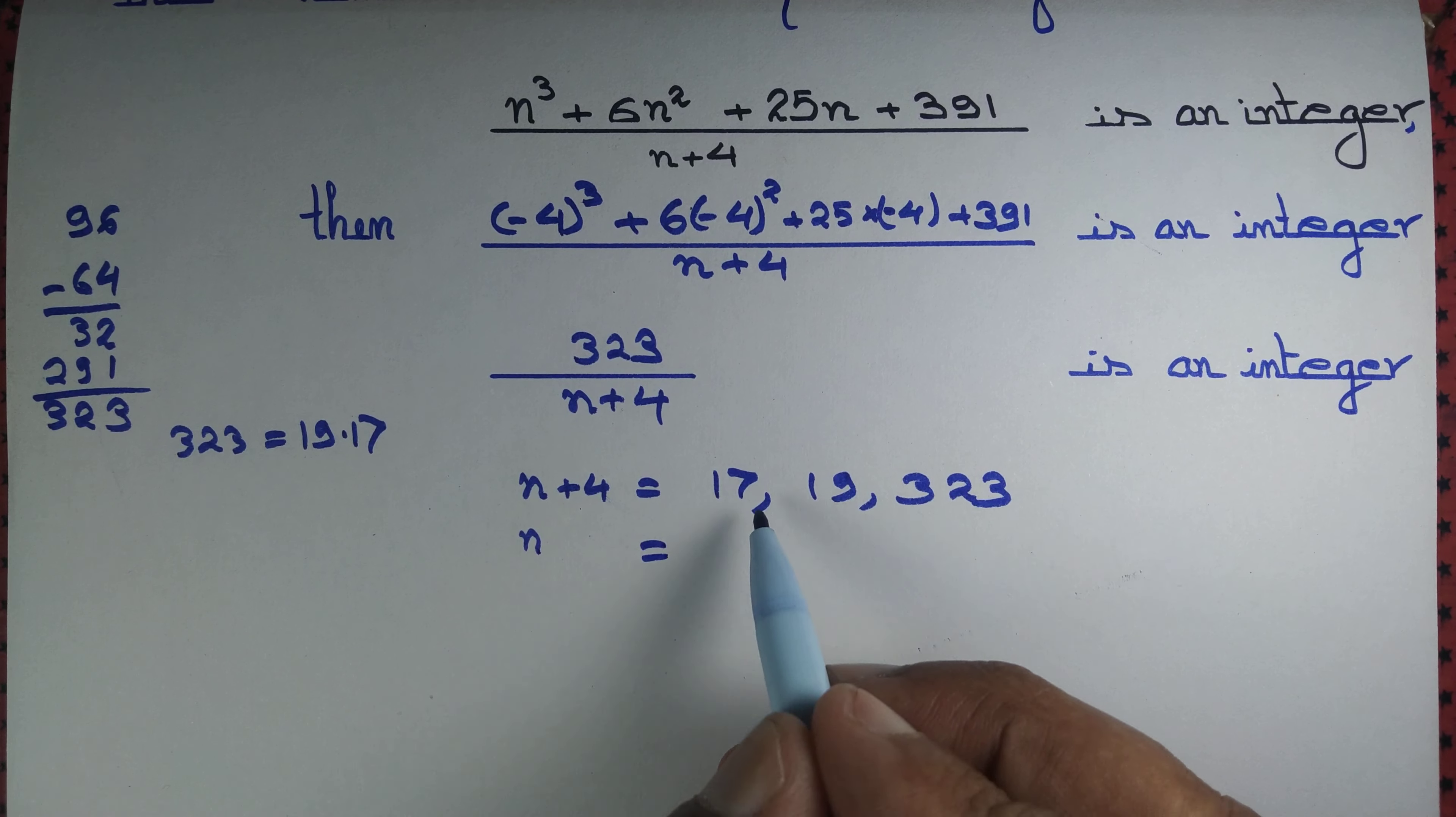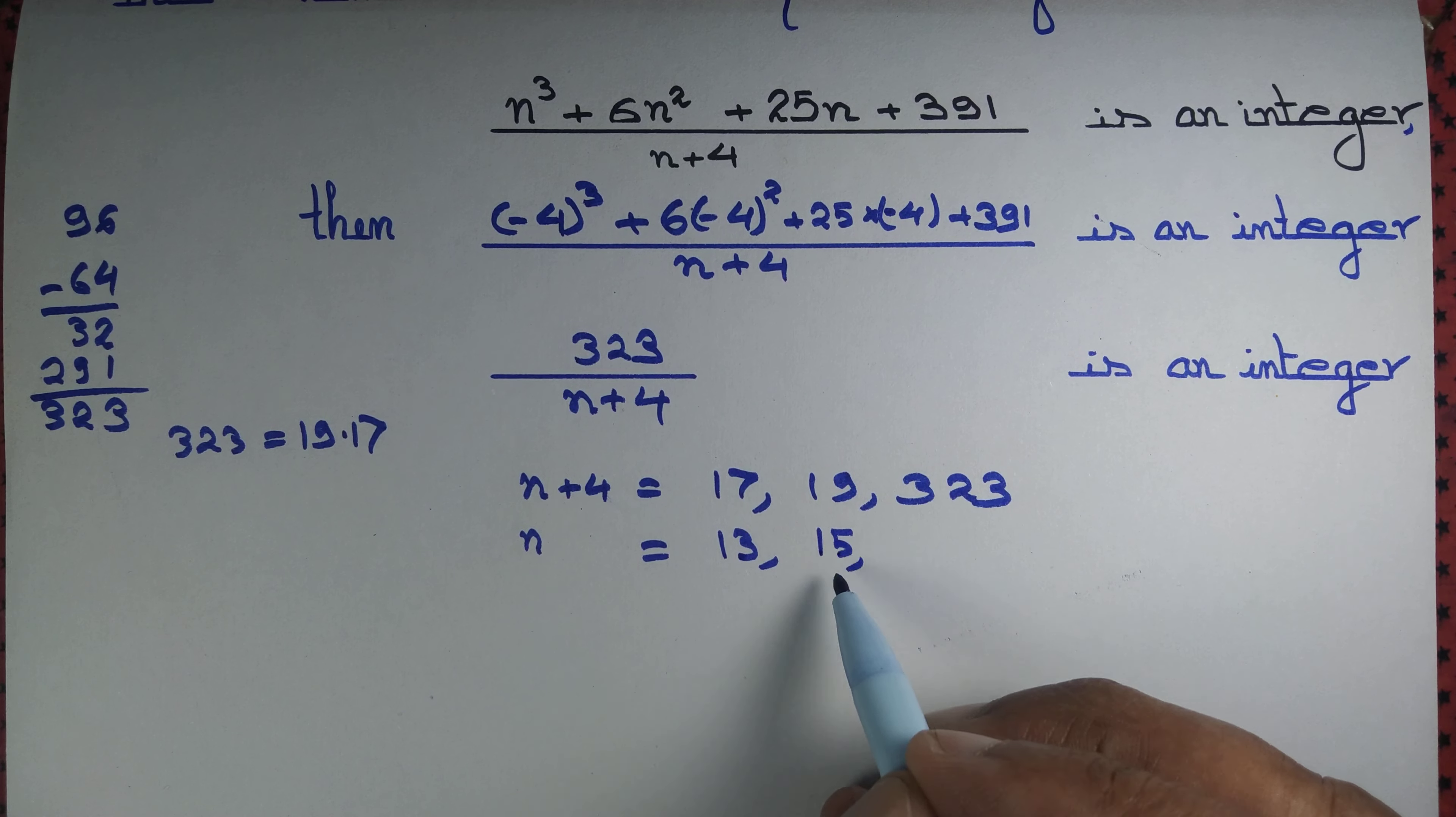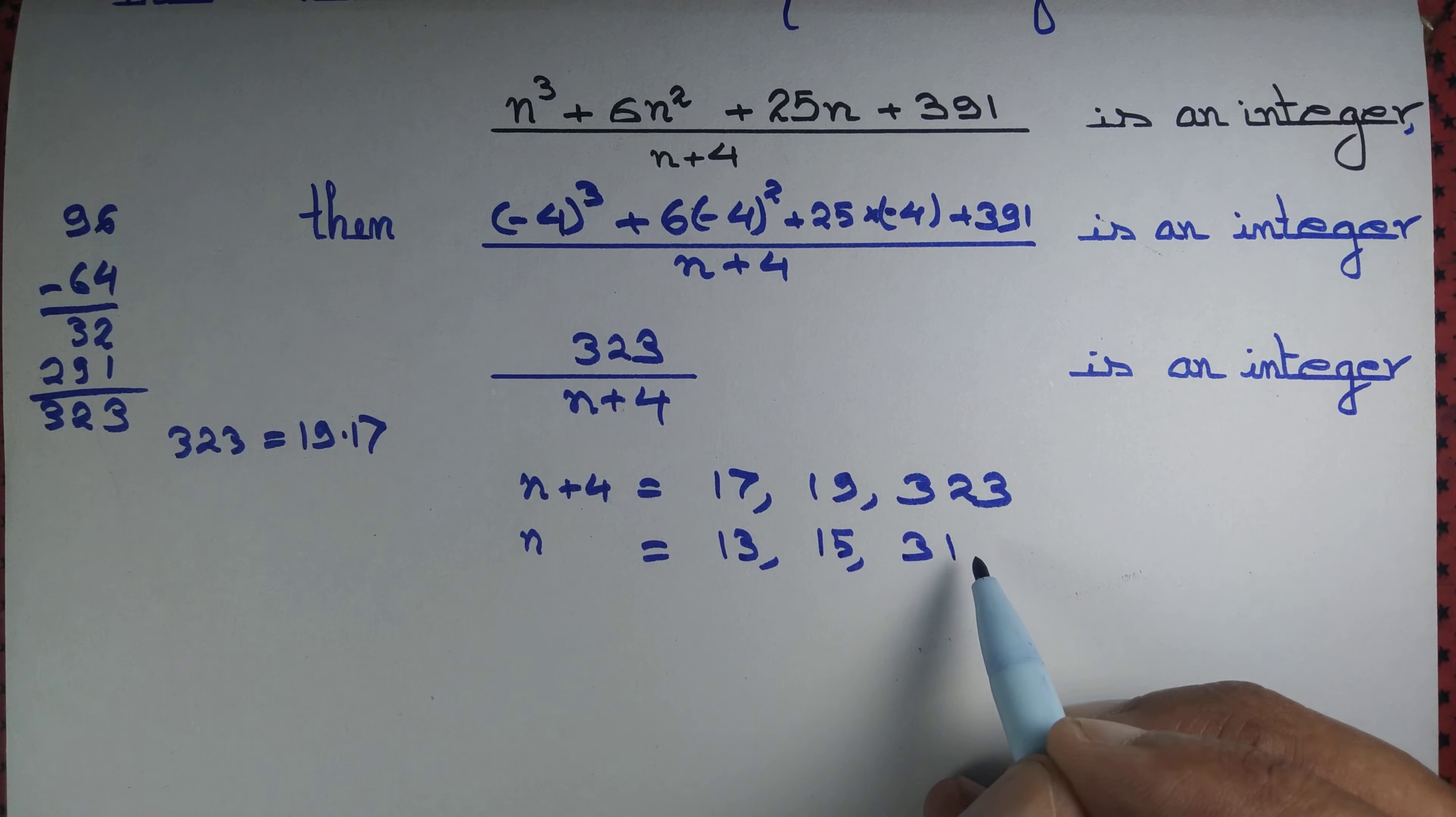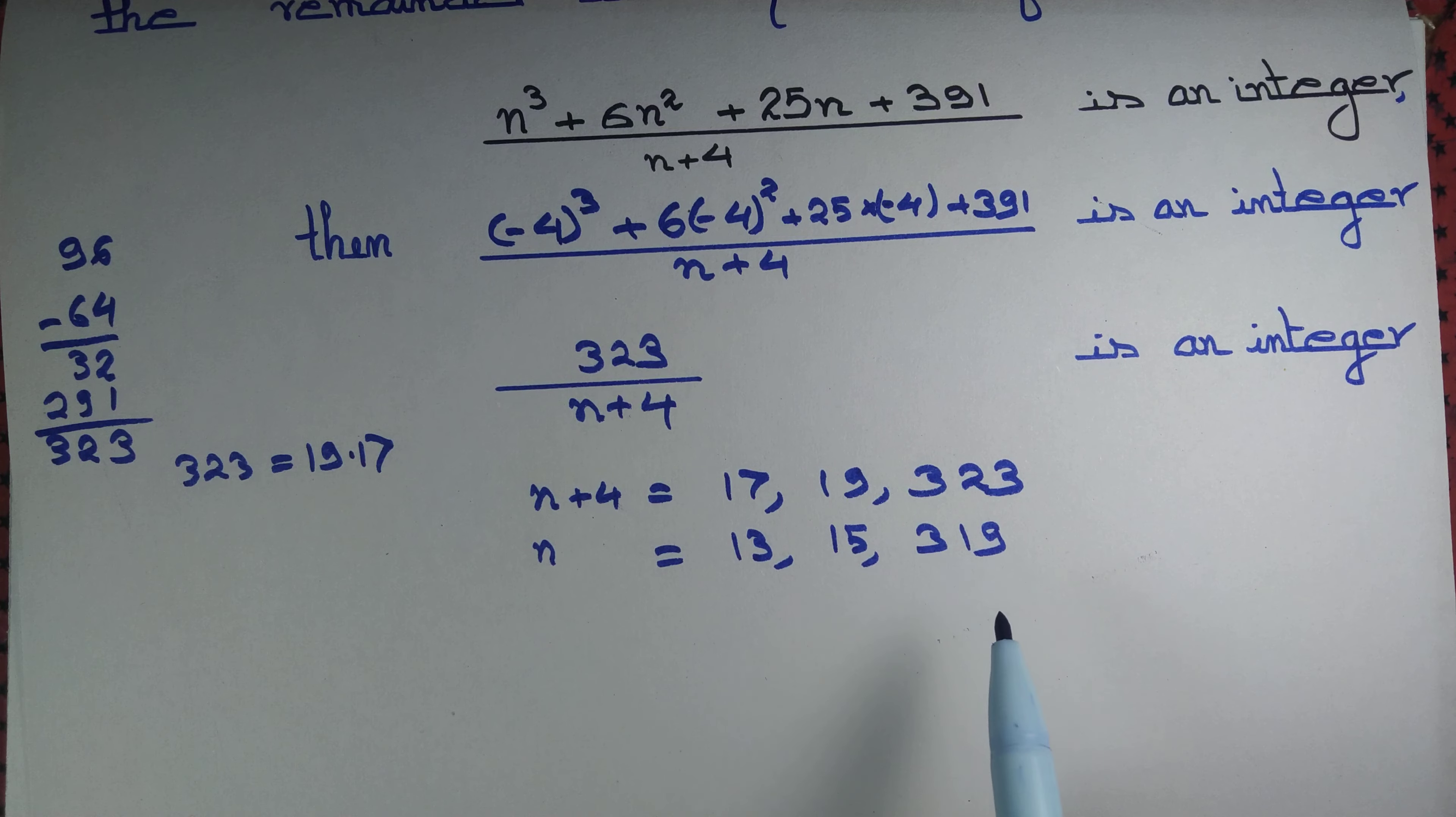So if n plus 4 equals 17, then n must be equal to 13. If n plus 4 equals 19, then n must be equal to 15. If n plus 4 equals 323, then n must be 319. So those are the three choices of n: 13, 15, and 319.